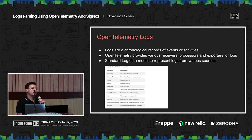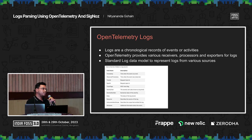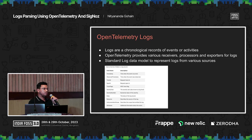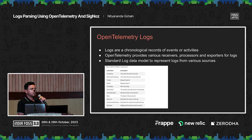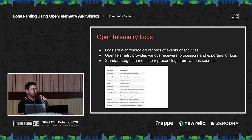By receivers, let's say your application is running on Kubernetes — you want to collect those logs from Kubernetes, or your application is running directly on a VM. OpenTelemetry provides various receivers to collect those logs. Then you have various processors — let's say you're collecting logs from Kubernetes and you want to change how it's structured, so you'll need processors. And then you have exporters to export those logs.